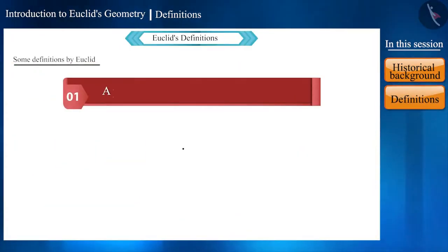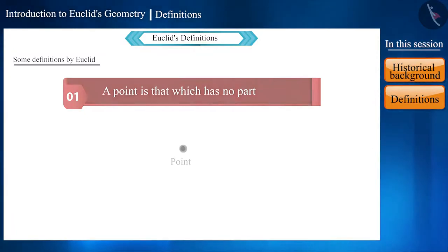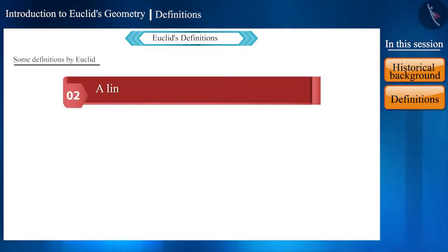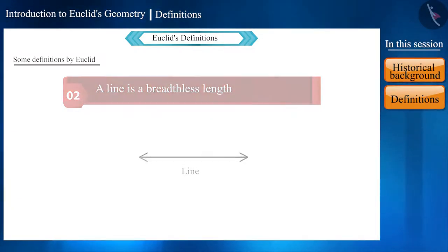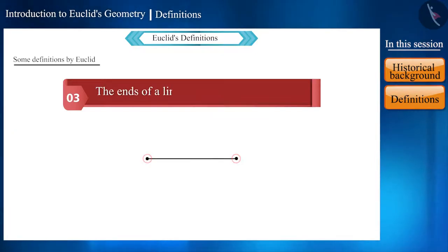Friends, let's look at those definitions. First definition: a point is one which has no area. Here they have not defined area. Second definition: a line is a breadthless length, that is, a line has no breadth. But here length and breadth are also not defined. The third definition is: both the ends of a line are points. This is where the line ends.